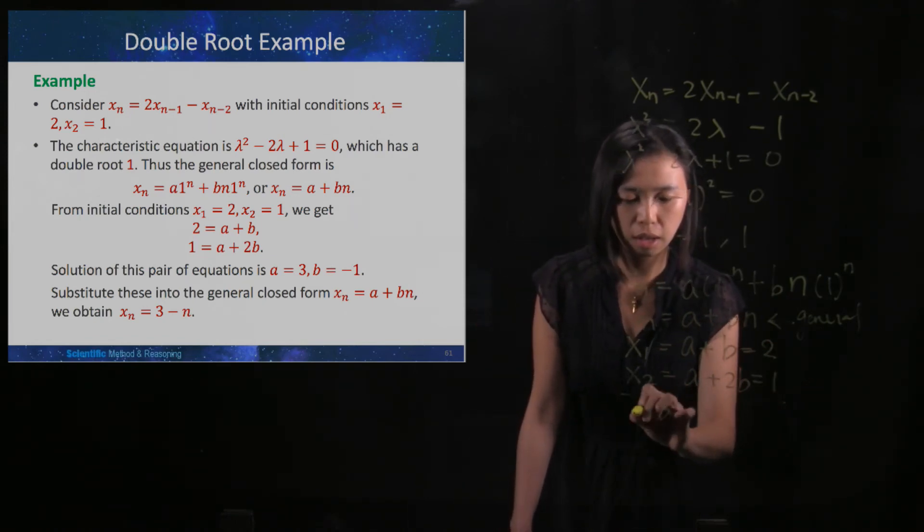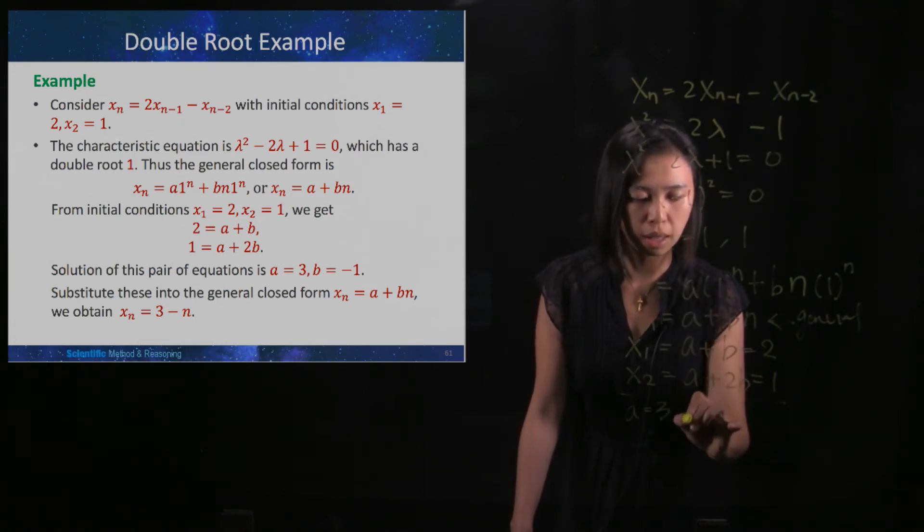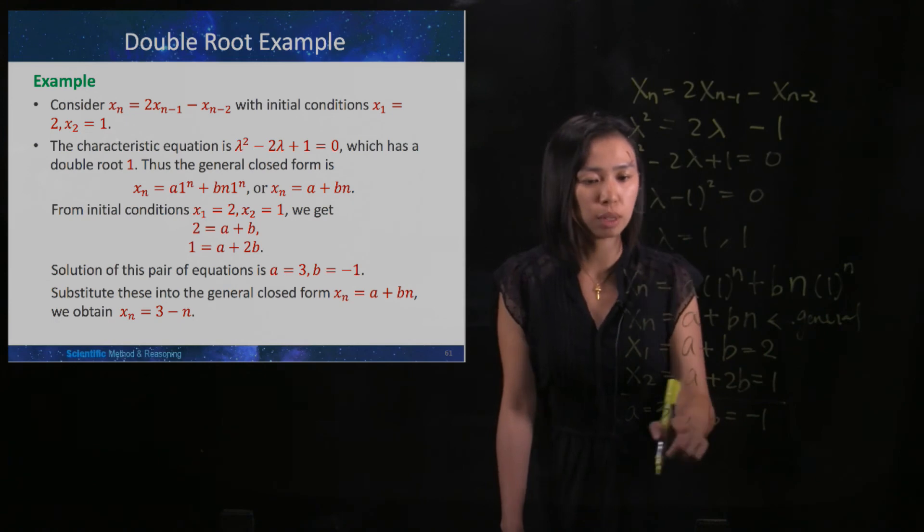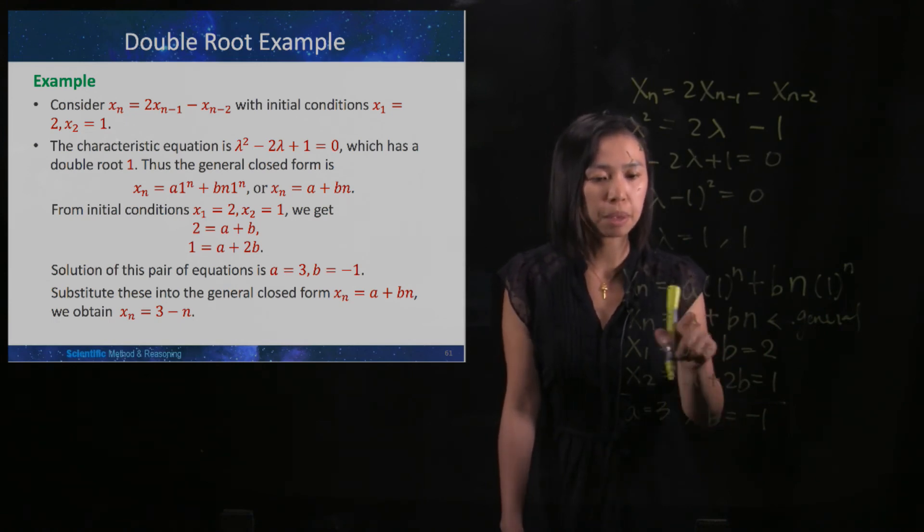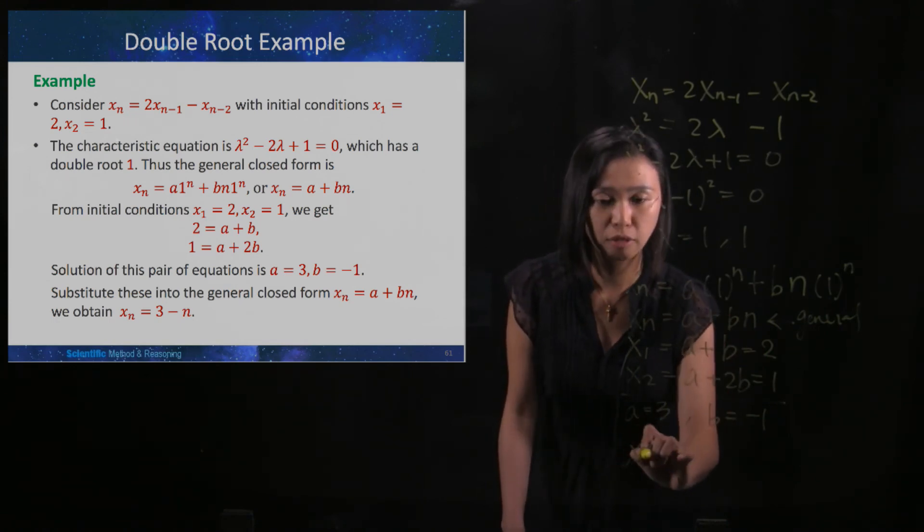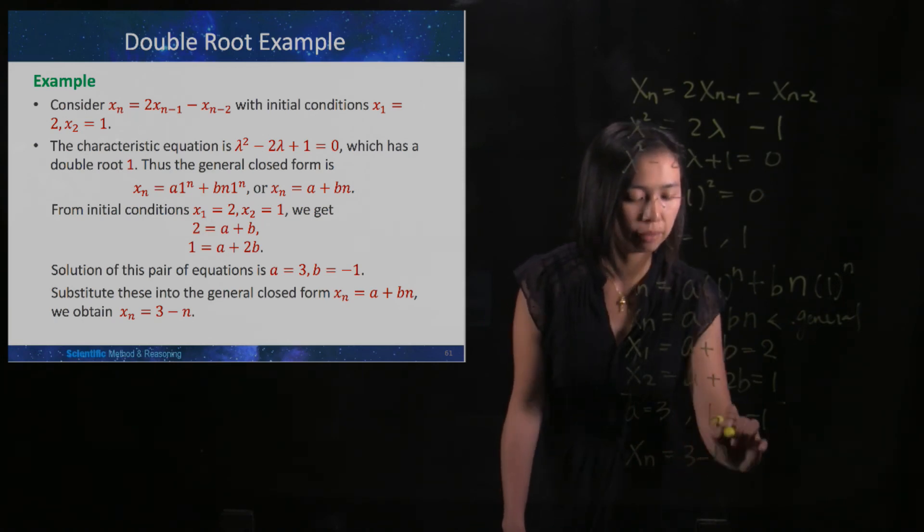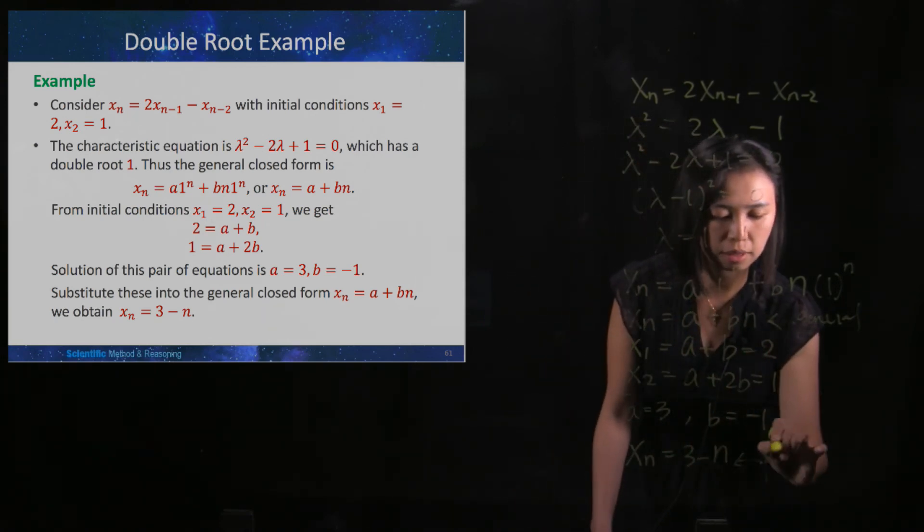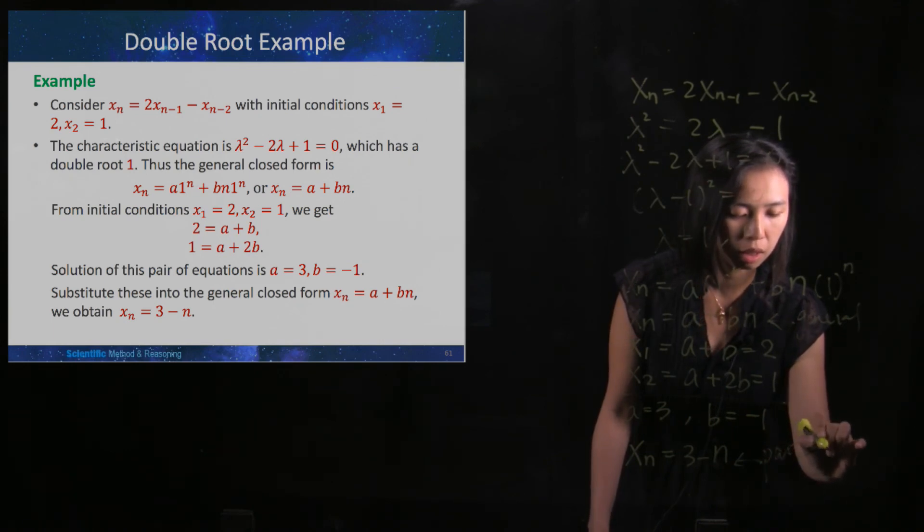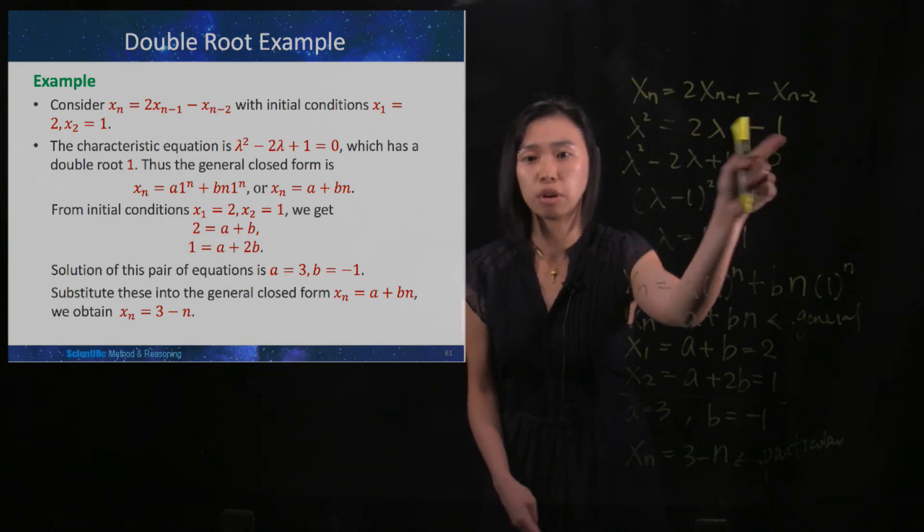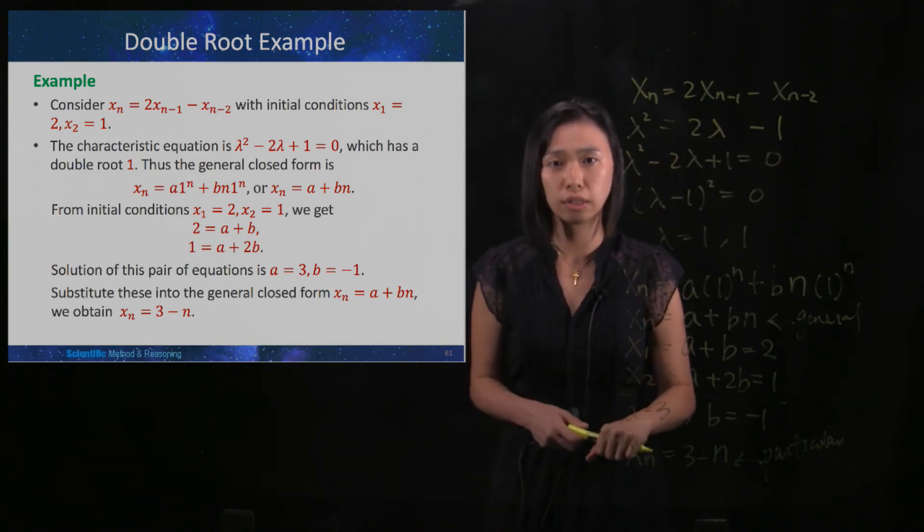I will get a to be 3 and b to be negative 1. So at the end, I will substitute this a and b back to the general solution. Then I have xn, which is 3 minus n. And this is the particular solution for this difference equation with the two initial conditions.